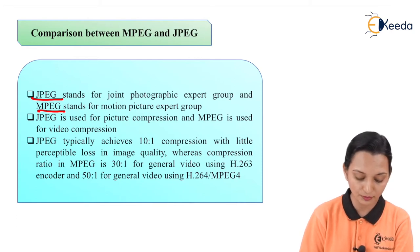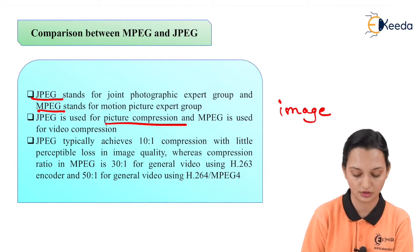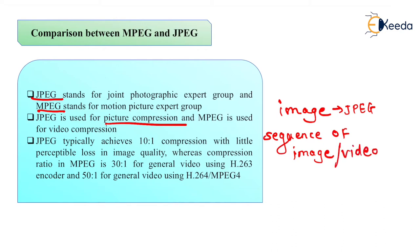JPEG is used for picture compression — that is, image compression — while MPEG is used for video compression. A sequence of images is essentially what makes up a video, and for compressing that sequence we use MPEG. So the basic difference between JPEG and MPEG is that JPEG is used for image compression and MPEG is used for video compression.